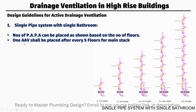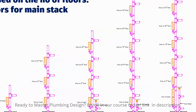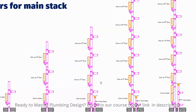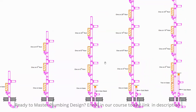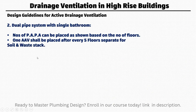One air admittance valve shall be placed after every five floors for the main stack. Similarly, for every five floors you need to place an air admittance valve on the stack, and one will be required for every branch. So this is the case for the single pipe system.